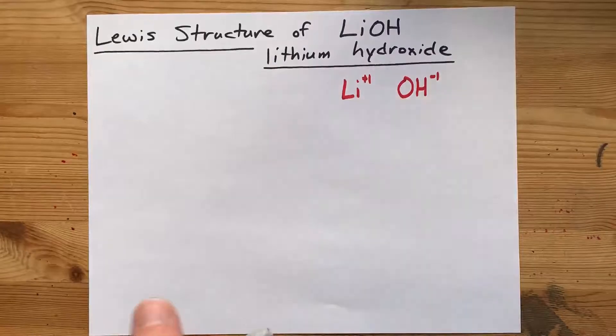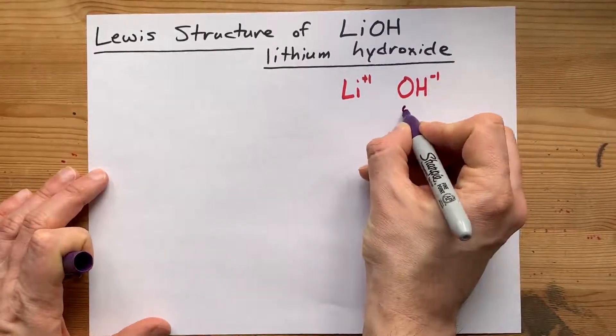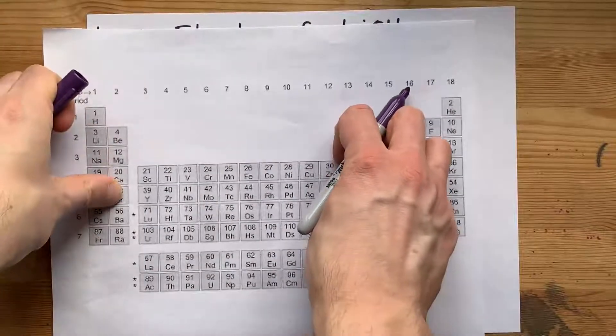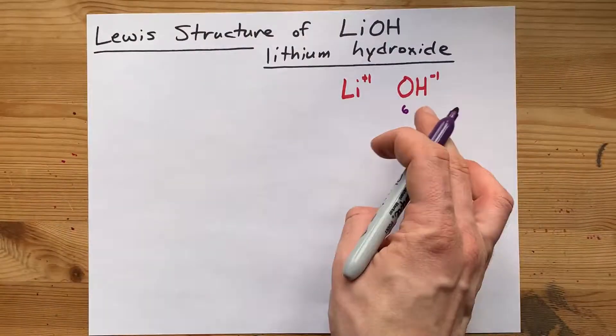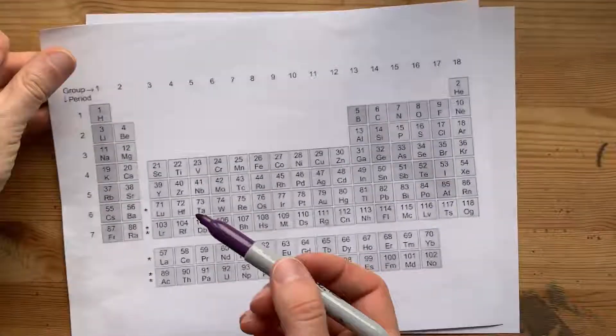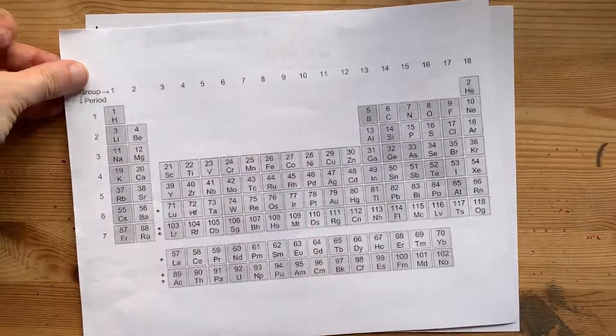Oxygen brings six valence electrons with it. I know that because oxygen is in group 16. Hydrogen brings one electron in its valence shell. It's in group one.